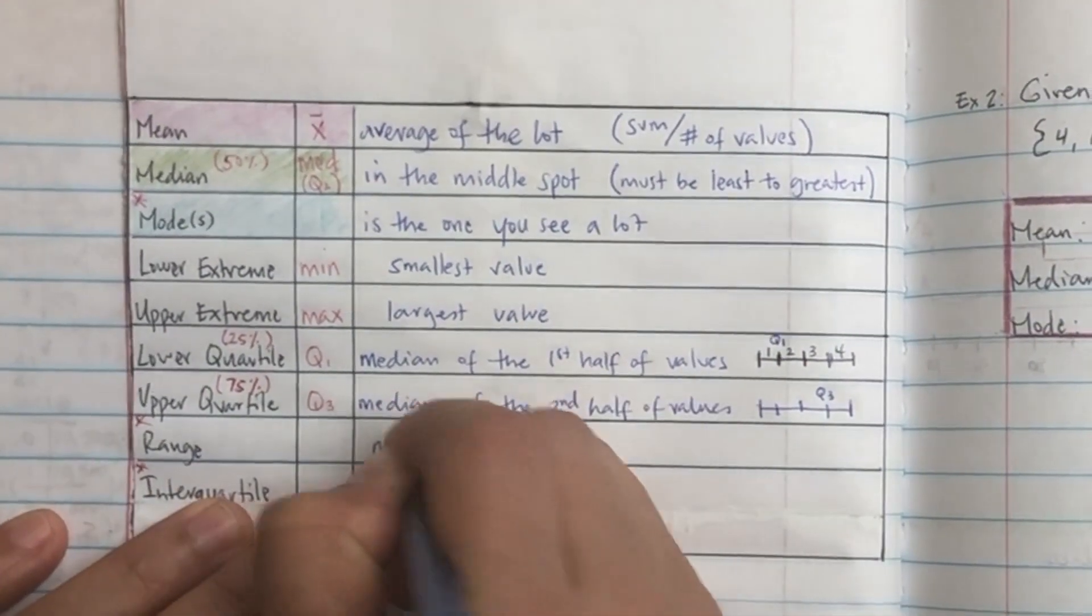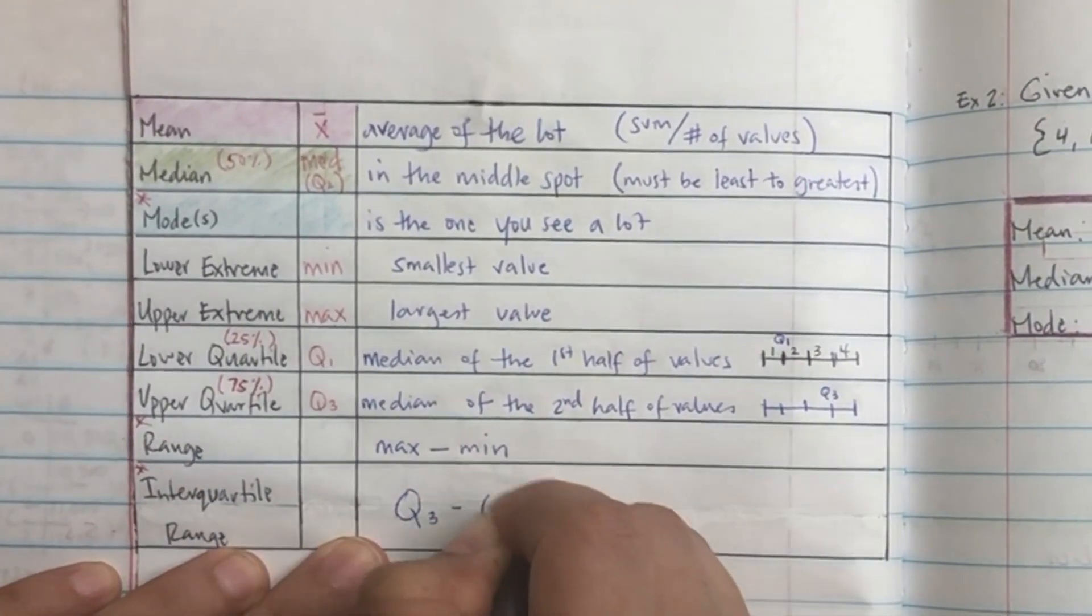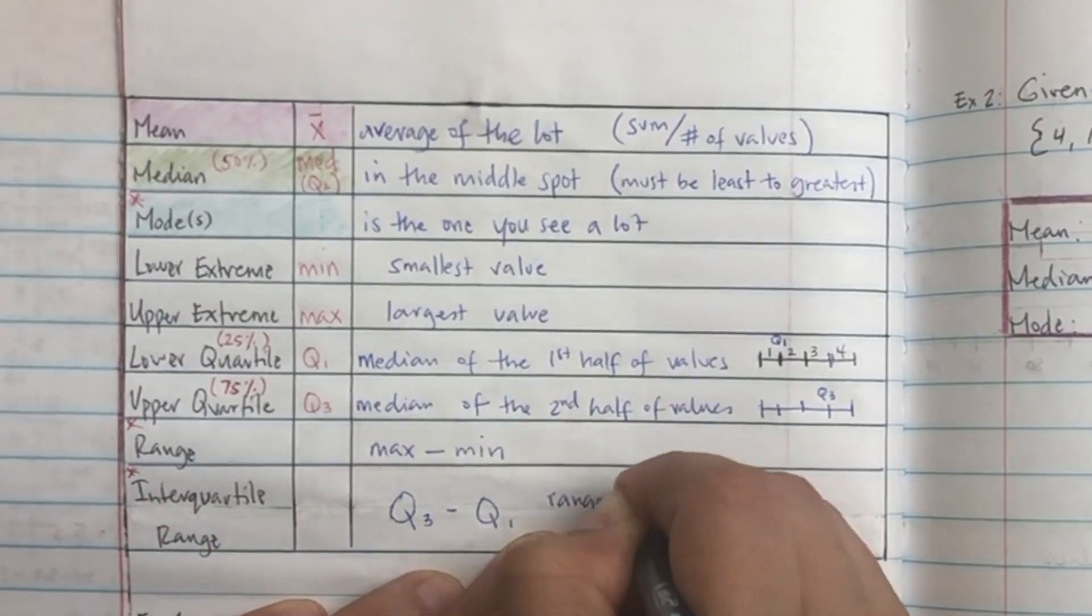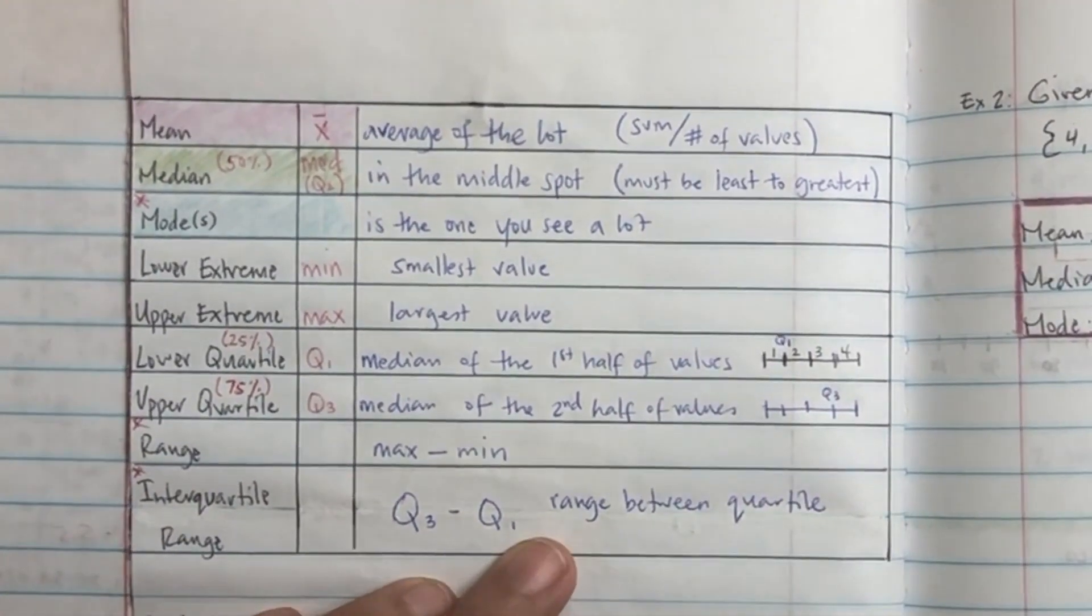And the range is the maximum number minus the minimum number. The interquartile range is when you take Q3 and you subtract Q1. So it's the range between the quartiles, and that's pretty much it.